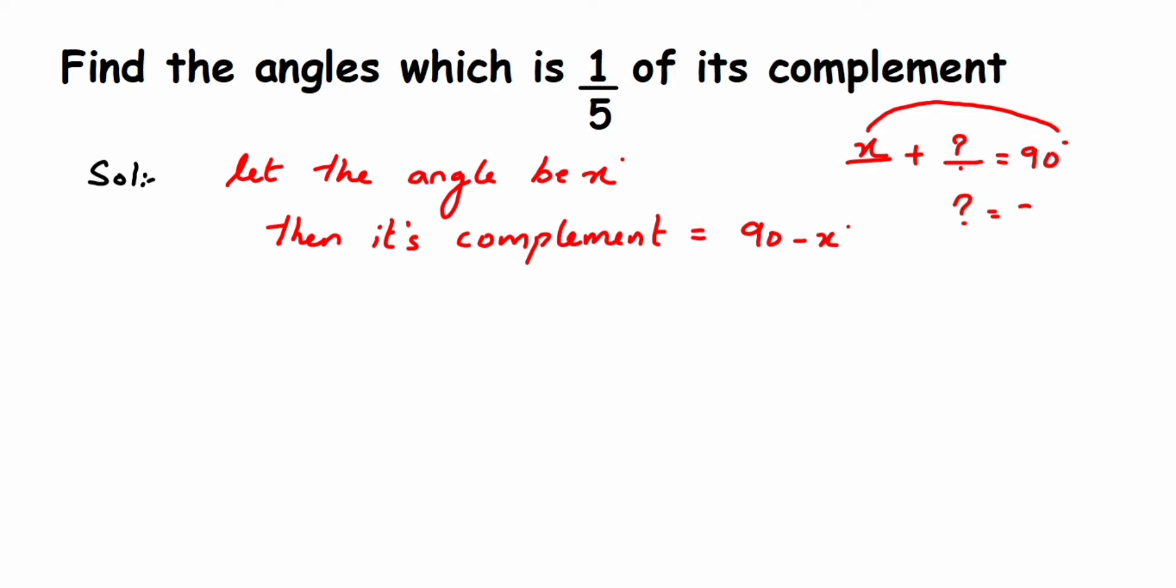That is why I have written 90 minus x degrees. I hope it's clear. Now let's read the question once again. They have given: find the angle which is one-fifth of its complement. So the angle x is equal to one-fifth of its complement, which is 90 minus x degrees. 'Of' means multiplication, so x equals one-fifth multiplied by 90 minus x degrees.